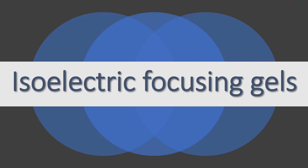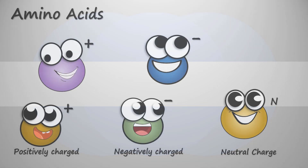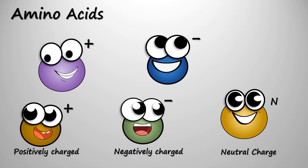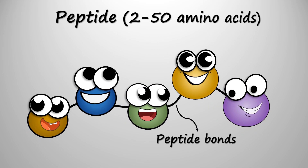In this video we will learn about isoelectric focusing gels, which are used to separate proteins. Amino acids have different charges — they can either be positive, negative, or neutral — and they are joined together through a peptide bond to form a peptide or protein.